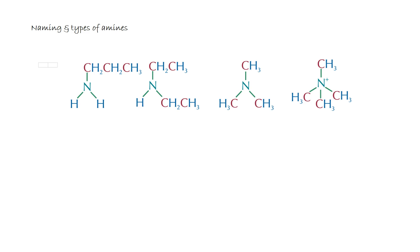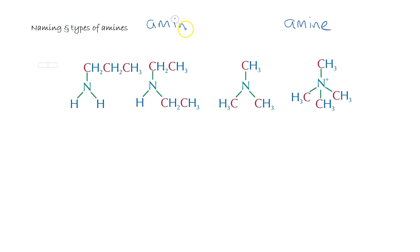Now let's have a look at naming these amines. If they're simple primary, secondary, tertiary, or quaternary amines they're going to have the suffix 'amine'. If they're with other groups such as carboxylic acids then we may use the prefix 'amino'. We're going to concentrate on the suffix 'amine' in this example.